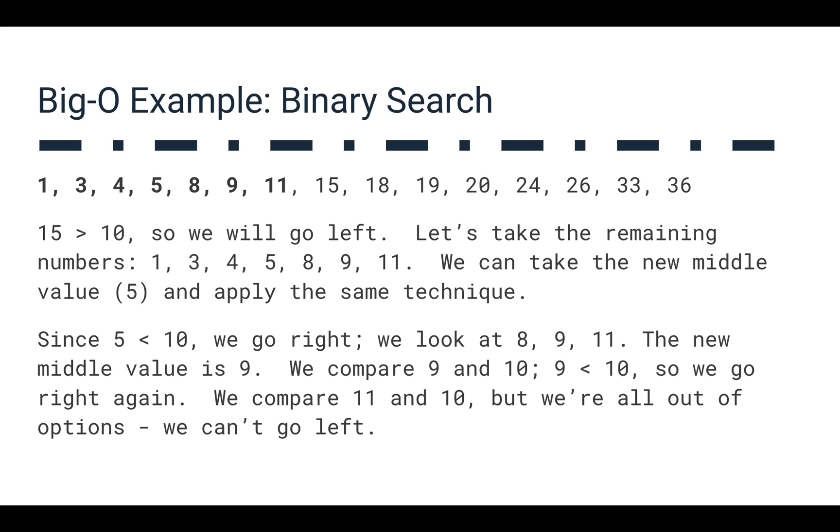So we're going to go to the left side, and then we're left with a smaller subarray here: 1, 3, 4, 5, 8, 9, 11. So if we look at that, we can find the new middle value here, which is going to be 5, and we apply the same technique. 5 is less than 10, so we have to go to the right. So we're left now with this smaller set of values: 8, 9, 11. So the new middle value is 9, we compare these, 9 is less than 10. So we go right again, and we compare 11 and 10. But we're all out of options, we can't go anywhere, we've kind of exhausted everything we can do here.